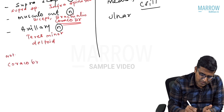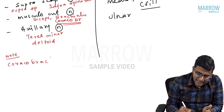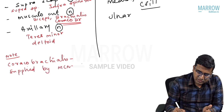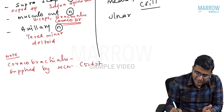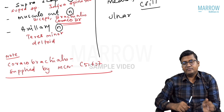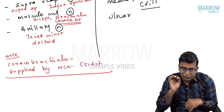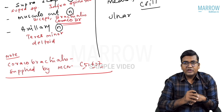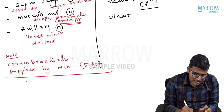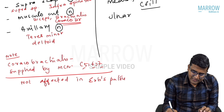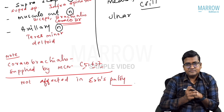Note: The coracobrachialis muscle is supplied by the musculocutaneous nerve with root value C5, C6, C7. So coracobrachialis is supplied by the musculocutaneous nerve only, but its root fibers are C5, C6, C7. That is why coracobrachialis is not affected in Erb's palsy.